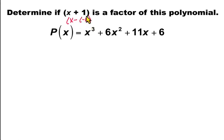And we plug in this negative 1 into this polynomial. So we get p of negative 1 equals negative 1 cubed plus 6 times negative 1 squared plus 11 times negative 1 plus 6.